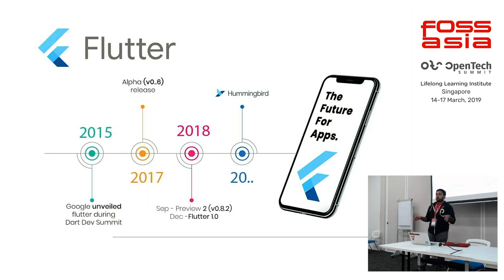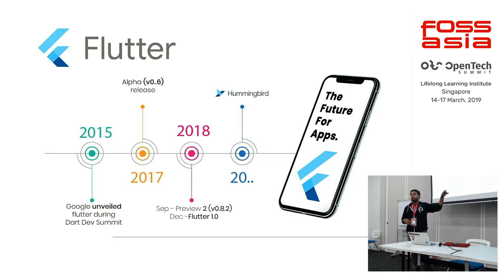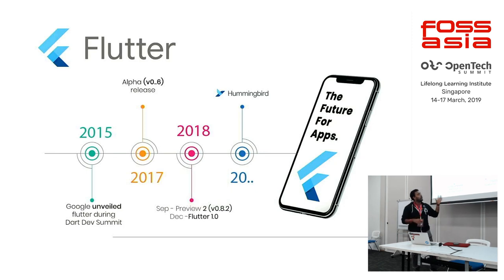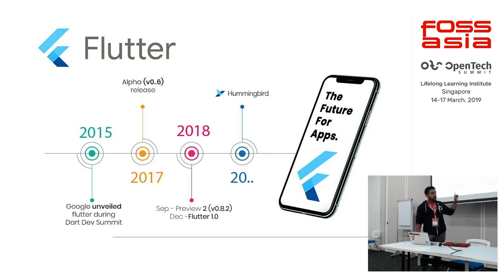Considering the path Flutter came: Google unveiled Flutter in 2015 during the Dart Dev Summit. They released their first alpha version back in 2017. Then 2018 was one of the most successful years for the Flutter team — they announced the preview to a stable version, which is where developers started to really play with Flutter. They released version 1 in December 2018. And we are waiting for something called Hummingbird — I'll talk about that in my last slides.